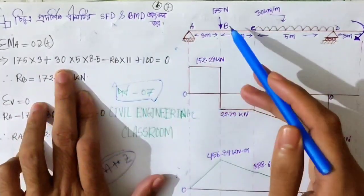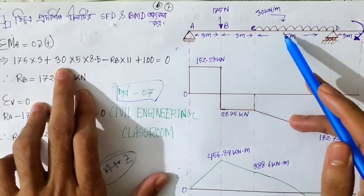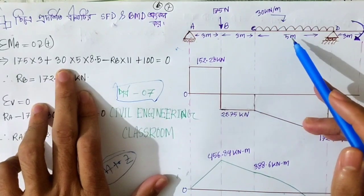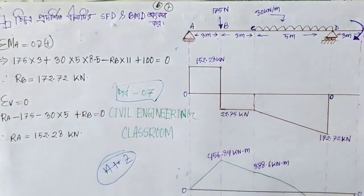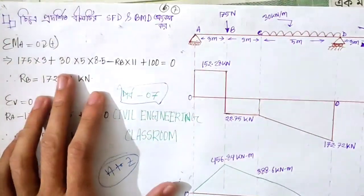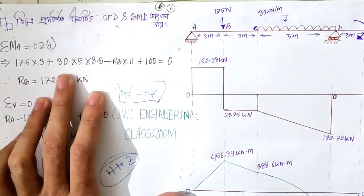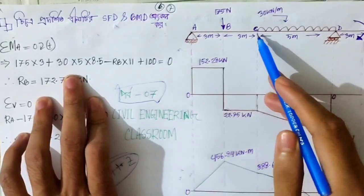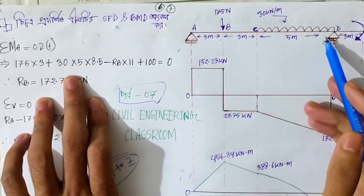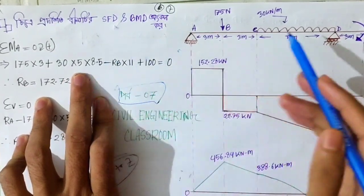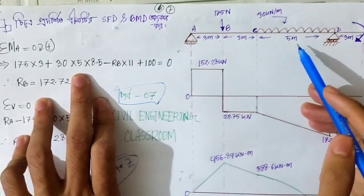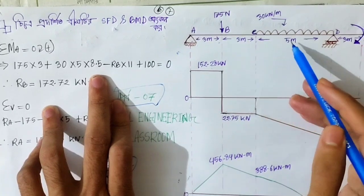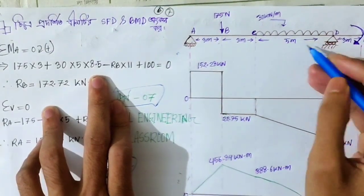Plus, there's a distribution load. What is the distribution load? 30 kN per meter. So let's write 30 into the equation. Let's see, we'll write 50 meter.